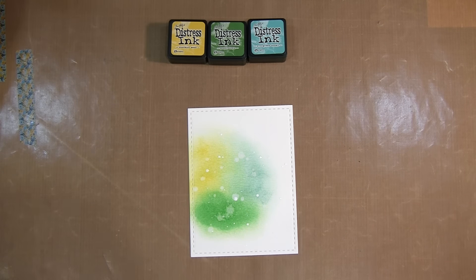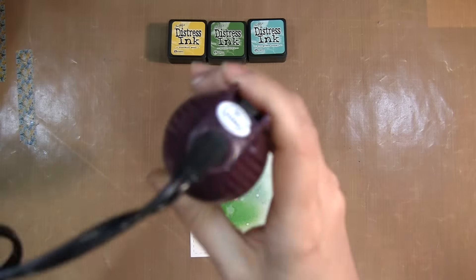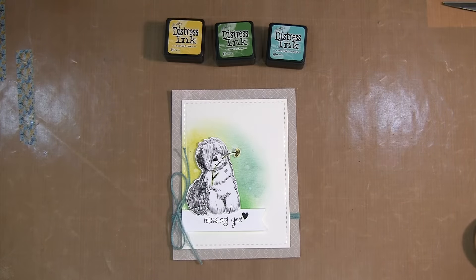And then I'll be using my heat tool here to make sure that's fully dry before I assemble my card. And that's it. That's my blended background using a baby wipe.